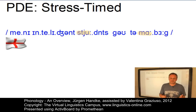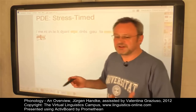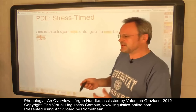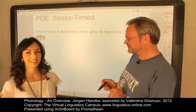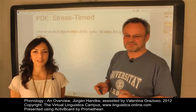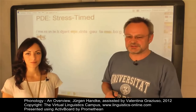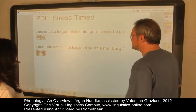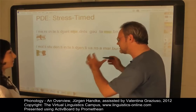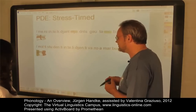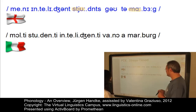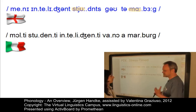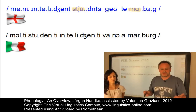Stress-timed languages can be contrasted with syllable-timed languages, where every syllable is perceived as taking up roughly the same amount of time. An example is Italian — the mother tongue of Valentina, one of our MA students. Welcome, Valentina. Valentina introduces herself in Italian, and reads the translation of our sentence — 'Molti studenti intelligenti vanno a Marburg' — to clearly illustrate the syllable-timed character of Italian. The syllables are almost equal in length.